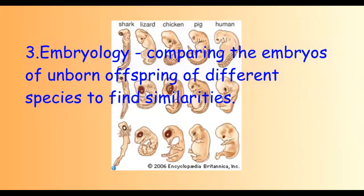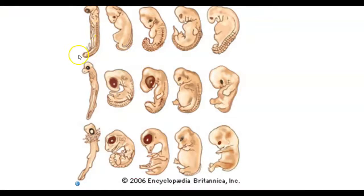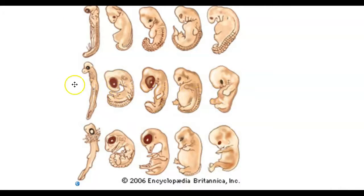Number three: embryology — the study of embryos, meaning unborn offspring of different species, looking for similarities and comparisons. When you look back at the youngest embryos in that first row, it's hard to tell what's going to be what. The middle row is a little older, and then finally the last row — humans are on the far right.